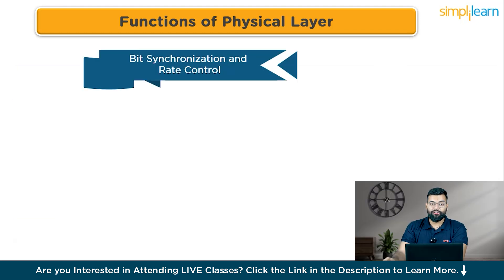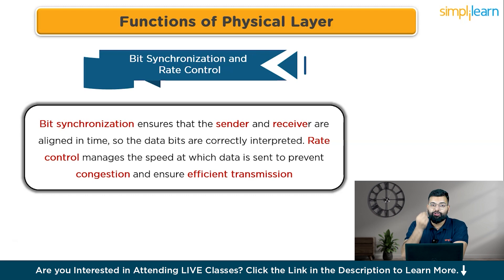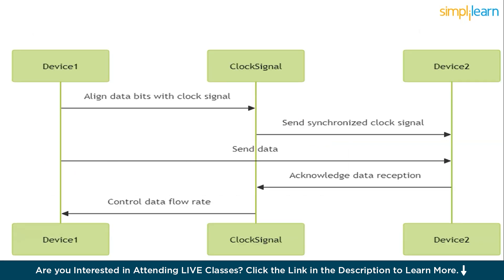Function two is bit synchronization and rate control. Bit synchronization ensures that the sender and receiver are aligned in time so that data bits are correctly interpreted. Rate control manages the speed at which data is sent to prevent congestion and ensure efficient transmission. For example, imagine two people talking over a walkie-talkie — they need to speak at the same pace (rate control) and wait for the 'over' signal before responding (synchronization).